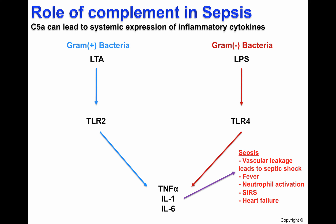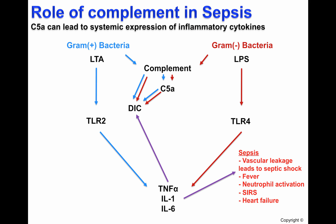During sepsis, vascular leakage can lead to septic shock. Fever and neutrophil activation can also occur. Additionally, sepsis can lead to systemic inflammatory response syndrome or even heart failure. When complement activation occurs, C5a is produced. Both complement activation and C5a may cause disseminated intravascular coagulation (DIC), which leads to the formation of blood clots that occlude vessels throughout the body. TNF-alpha can also cause DIC. Systemic expression of C5a can therefore also contribute to sepsis.